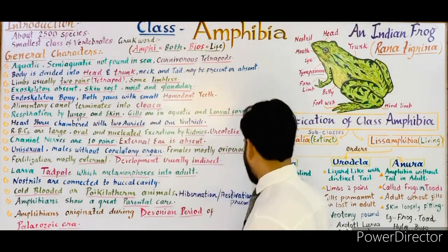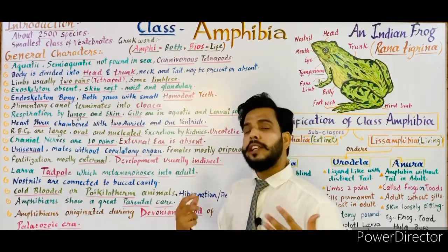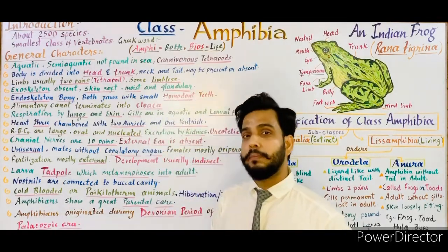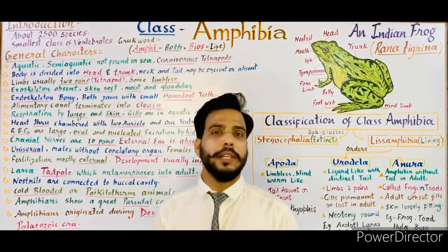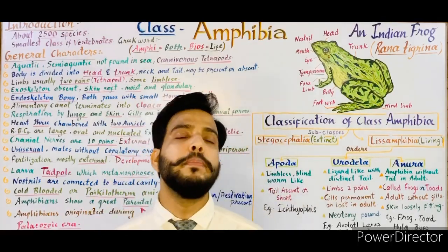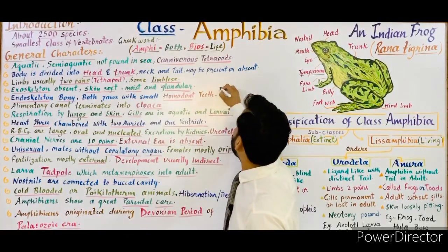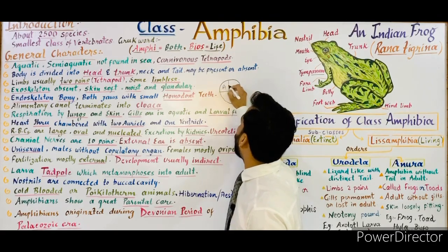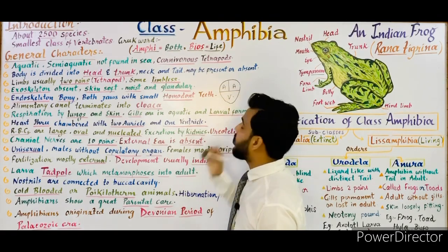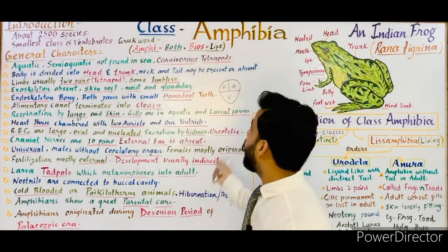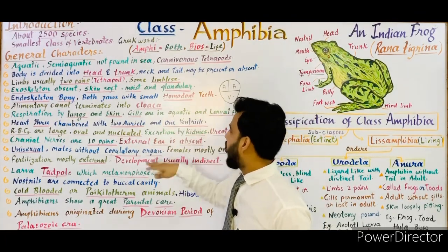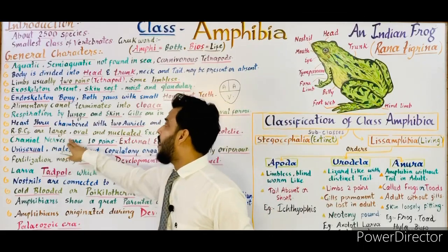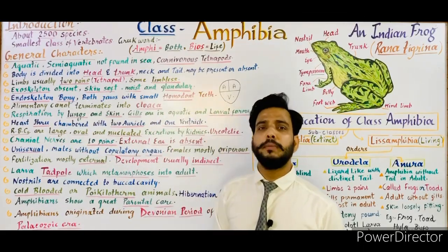The heart is three-chambered. In humans the heart is four-chambered — two auricles and two ventricles. But in amphibians there are only three chambers: two upper chambers called auricles and one lower chamber called the ventricle.